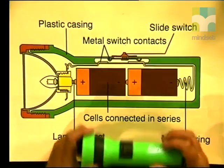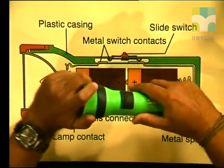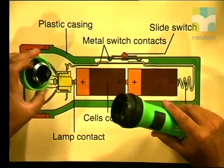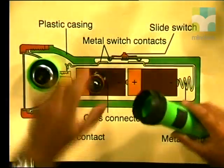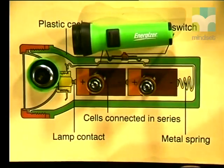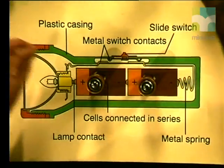But for now let's look at a simple circuit that you all know — namely this electric torch. How many of you have ever taken an electric torch apart to see how it works? Here is a diagram to show you how the parts inside the torch are arranged. Here is my torch and I will take it apart for you. I will unscrew the lamp portion — there is the lamp portion in the front, the two cells, and there is my casing.